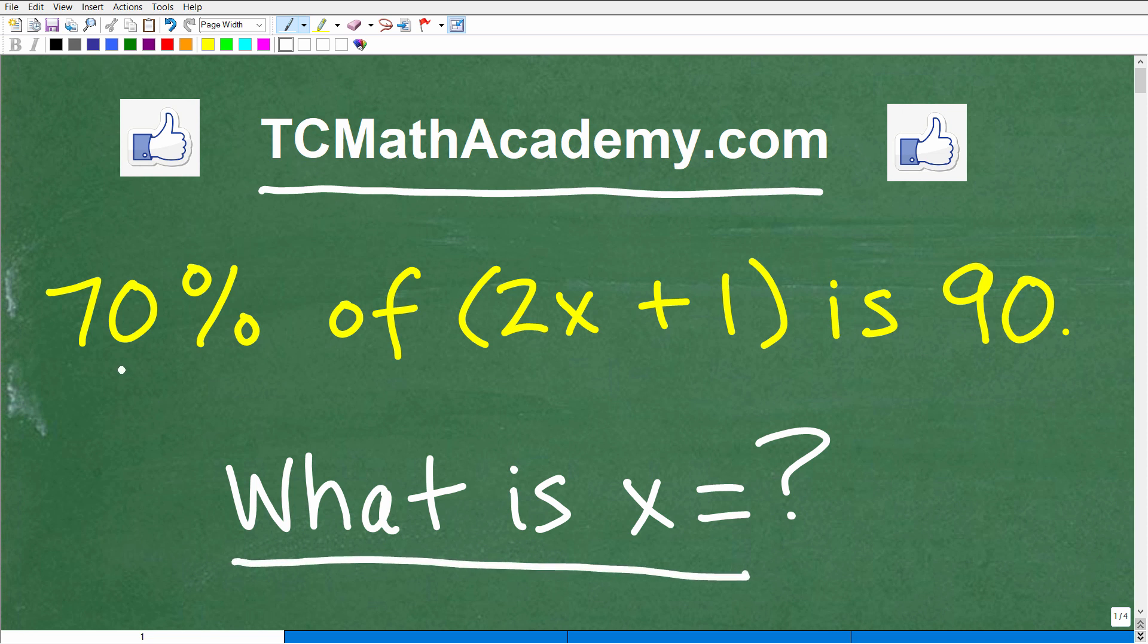But really, the question is 70% of 2x plus 1 is 90. We want to solve for this variable right here, x. So if you think you can figure this problem out, go ahead and put your answer into the comment section.